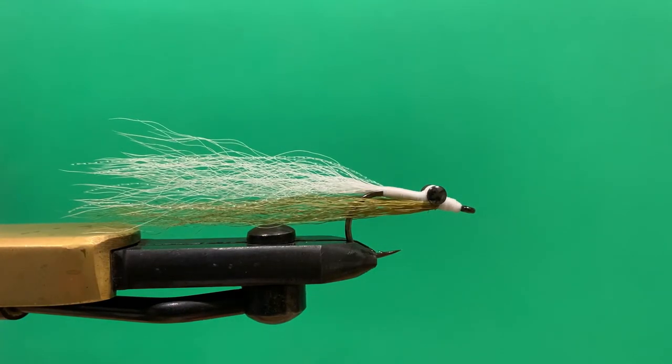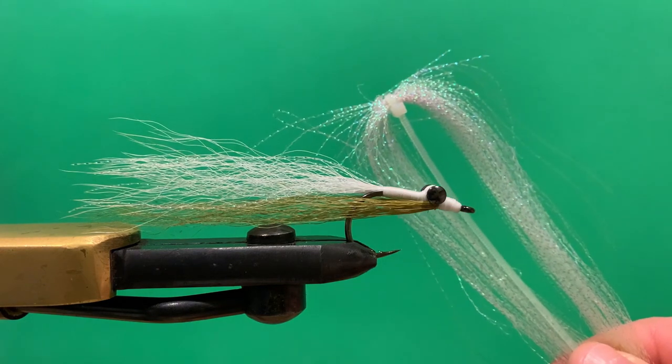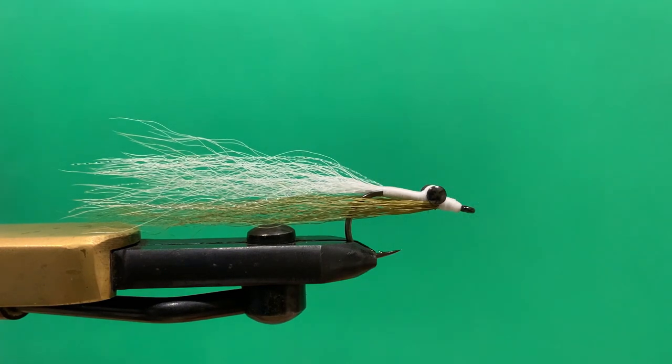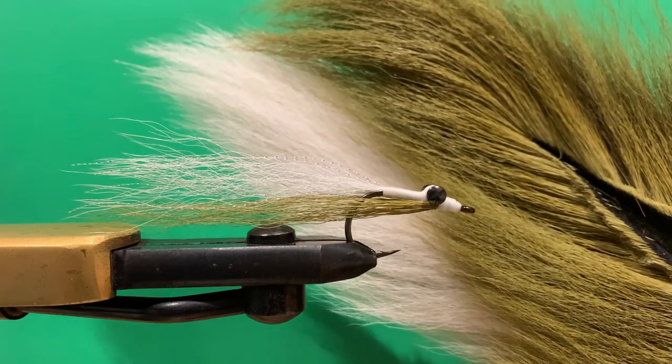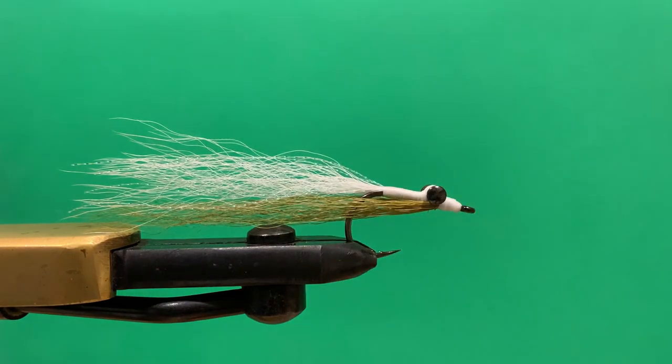Then you need your flash. I'm not a massive fan of very flashy flies, but you can put as much or as little in as you like. I'm just putting in one or two strands of this crystal flash. The main body of the clouser is tied with bucktail. I'm going with olive and white—a nice standard sandy imitation.